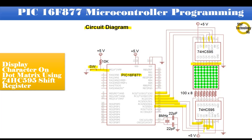This second shift register is connected with the dot matrix row pins. Current-limiting resistors of 100 ohm are used. We are using an 8x8 dot matrix display. Pins 13 and 14 are interfaced with an 8 MHz crystal, with 22 pF capacitors connected to the crystal. Pins 11 and 32 are connected to positive 5 volts, and pins 12 and 31 are connected to ground.